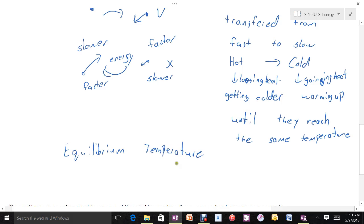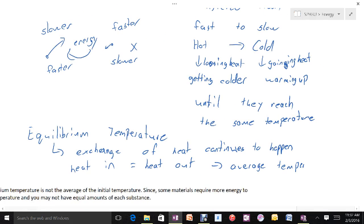It's called an equilibrium temperature because exchange of heat does continue to happen. Sometimes some particles of substance A get banged around and go faster, sometimes they go slower. But what an equilibrium means is that the heat in is equal to the heat out. And so, the average temperature becomes constant.